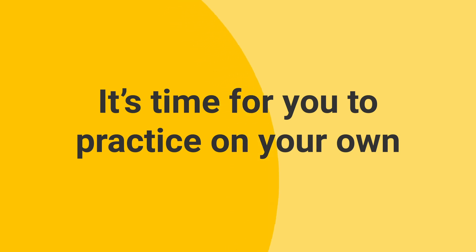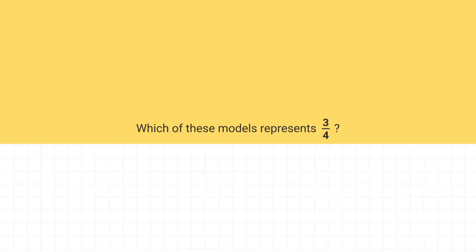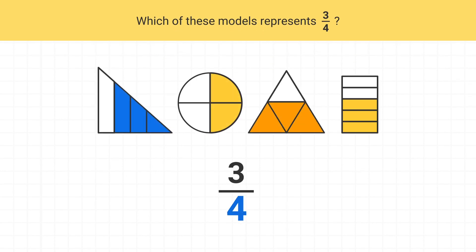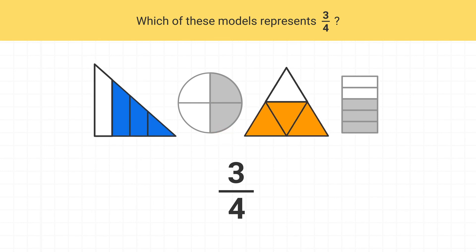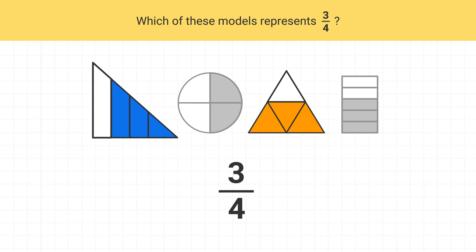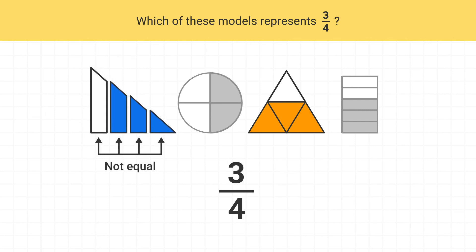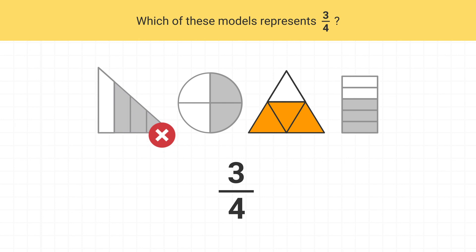Now it's time for you to practice on your own. Which of these models shows the fraction 3 fourths? We have fourths, so we first look for models that have 4 total pieces. This last model doesn't have 4 pieces, so it can't be correct. But all the rest of them do have 4 pieces. After that, we need to find which model has 3 shaded pieces. This circle has 1, 2 shaded pieces, so it can't be this circle. Both of these two models have 3 shaded pieces, but in this model the parts are not all equal, so this can't be correct. The only correct model is this one.